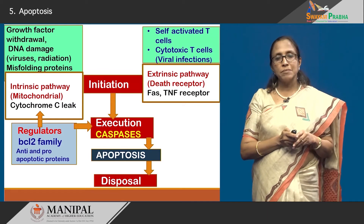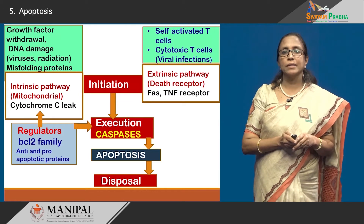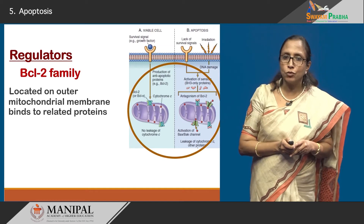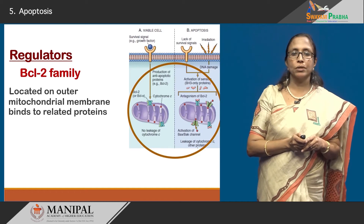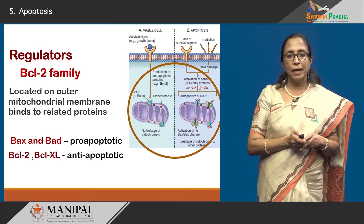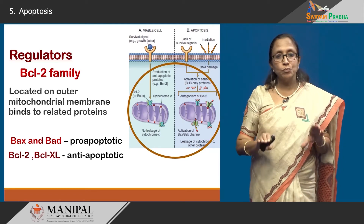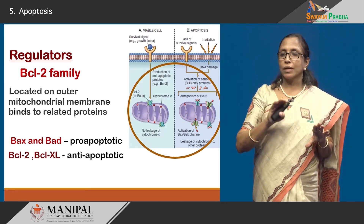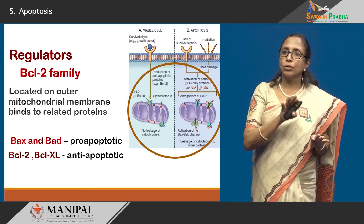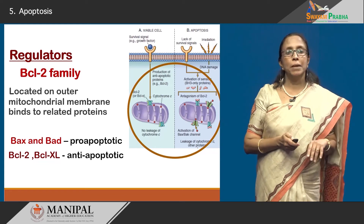For execution, the main enzymes required are the caspases — they cause the cell killing or execution. Looking at the regulators, the BCL2 family are located on the mitochondrial membrane. There are pro-apoptotic proteins such as BAX and BAD, and anti-apoptotic proteins like BCL2 and BCL-XL. There is normally a balance between them. When apoptosis must happen, the pro-apoptotic proteins become more active, and as a result, cytochrome C is released, initiating the intrinsic pathway.